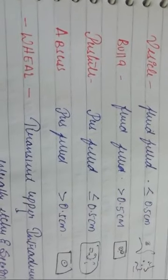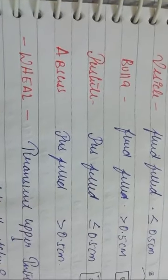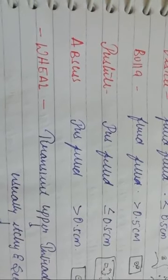Next is pustule — a pus-filled lesion less than or equal to 0.5 centimetres. These are small pus-filled lesions. Whenever we use the word pustule, it means pus-filled but less than 0.5 centimetres. Next is abscess — pus-filled more than 0.5 centimetres. So pustule is pus-filled less than 0.5cm, and abscess is pus-filled more than 0.5cm.